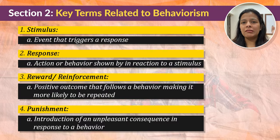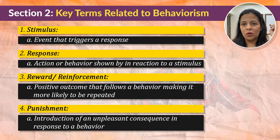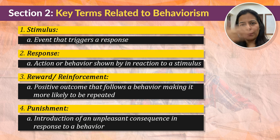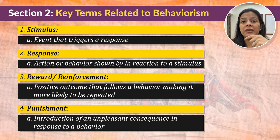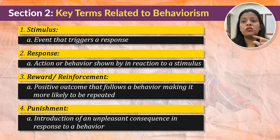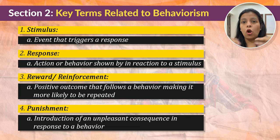Now the last term we are going to look at is Punishment — the opposite of reward. What is punishment? Punishment basically refers to the introduction of an unpleasant consequence in response to a behavior, with the aim of reducing or eliminating that behavior.